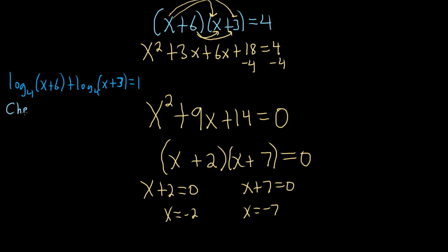So let's check negative 2. Let's do that one first. It's really important that you check with the original equation. So log base 4 of negative 2 plus 6 plus log base 4 of negative 2 plus 3. And this should be equal to 1. So when you add here, you just get 4. So you get log base 4 of 4. And then plus log base 4 of 1. And that should be equal to 1.